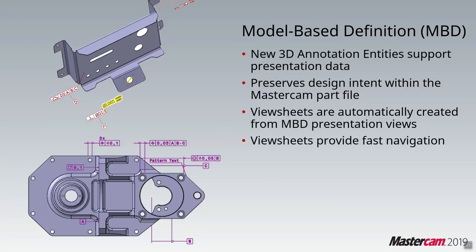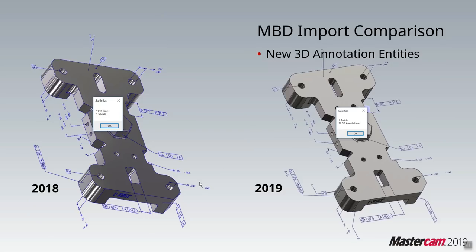Starting in 2018, Mastercam added the ability to use model-based definitions. There was one small issue though: when they were imported they were converted into lines, arcs, and splines — a whole bunch of geometric elements, resulting in 1739 lines in one solid. Now in 2019, when you import those annotations they come in using Mastercam's annotation format. They live as annotations — you can move them around, edit them, position them correctly, and they're not geometry.